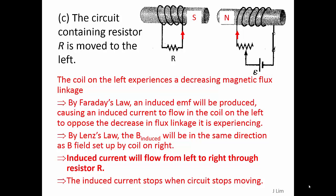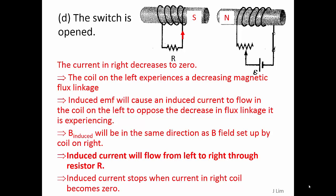The induced current will flow from left to right through resistor R, and stops when the circuit stops moving. As the current in the right coil decreases to zero, the coil on the left again experiences a decreasing magnetic flux linkage. The induced EMF causes a current to flow opposing the decrease, with the induced magnetic flux density in the same direction as the right coil's field. The induced current flows from left to right through resistor R and stops when the current in the right coil becomes zero.